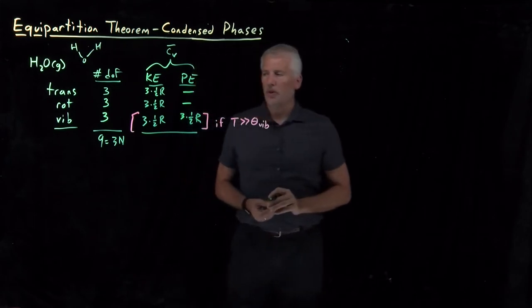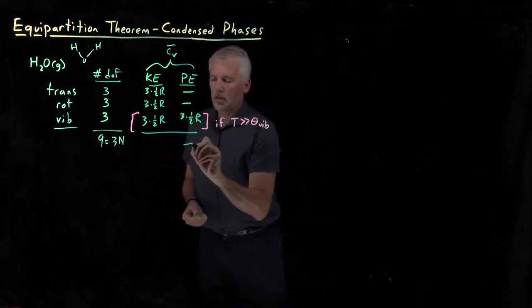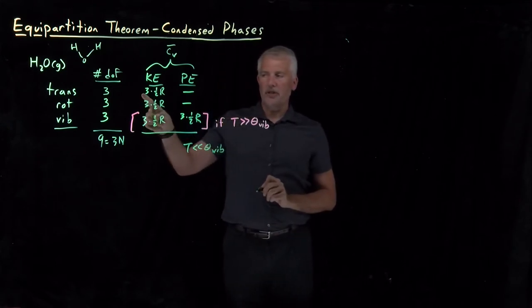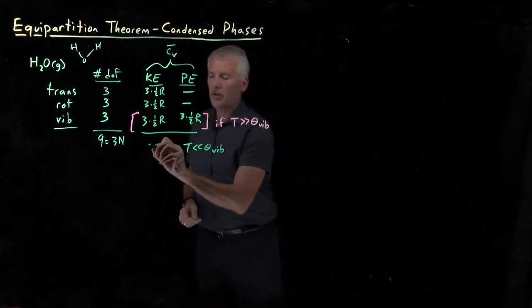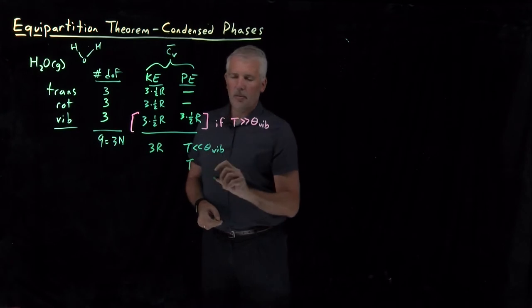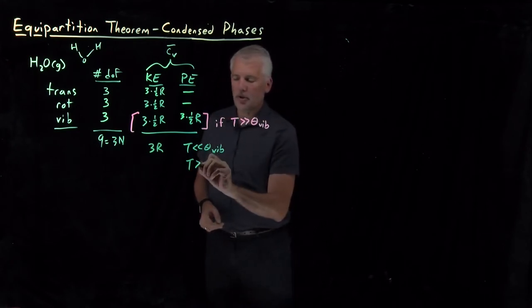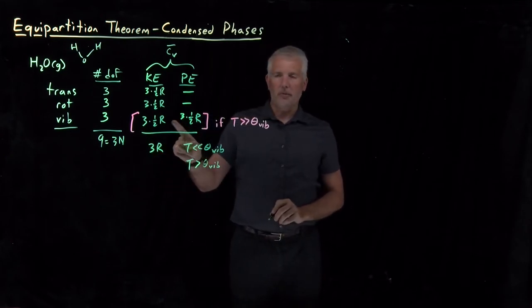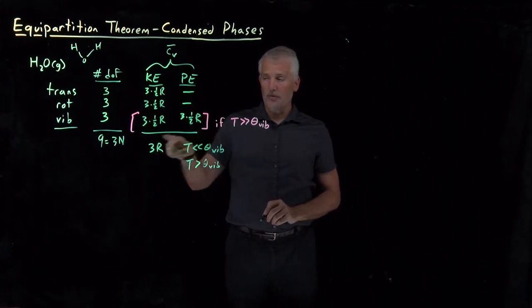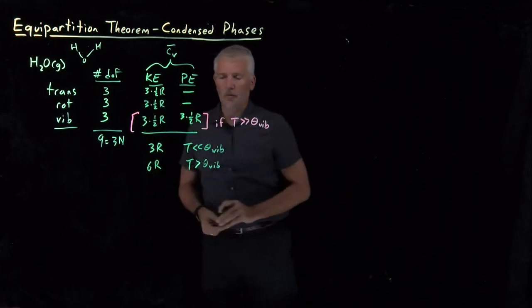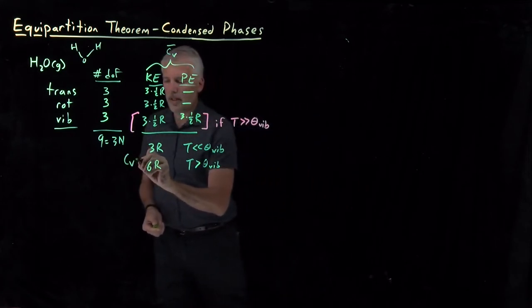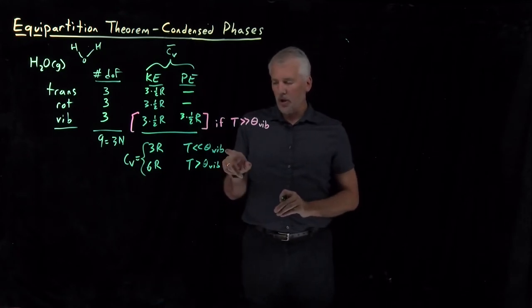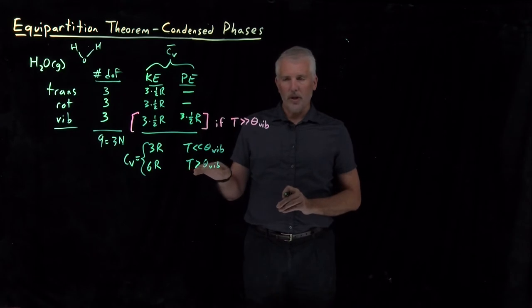Adding everything up: if we're cold compared to the vibrational temperature, we only count translations and rotations — three plus three times ½R gives a total of 3R. If we're hot enough to include vibrations, we add three kinetic and three potential vibrational contributions — an additional six factors of ½R — giving a total heat capacity of 6R. In between, we'd expect a gradual transition between the two limits.